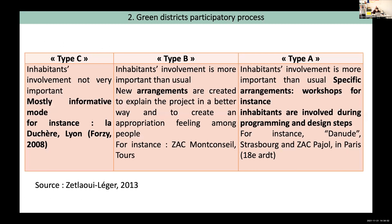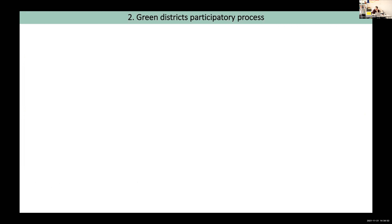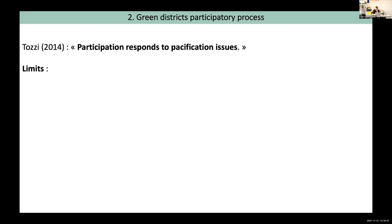According to Zetlawi Leger, three types of inhabitant participatory processes exist. Type C: inhabitant involvement is not very important, mostly an informative mode. Type B: inhabitant involvement is more important than usual — new arrangements are created to foster a feeling of appropriation among people. Type A: people are involved during the whole process with specific arrangements such as workshops, and inhabitants contribute to the definition of urban plans or patterns.